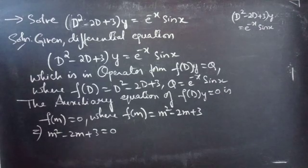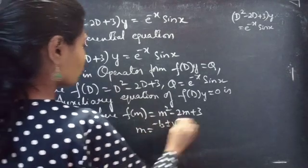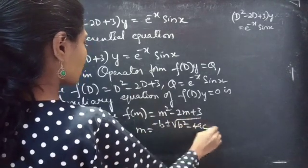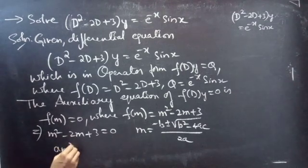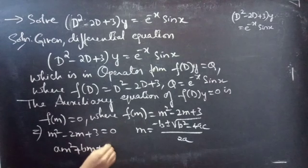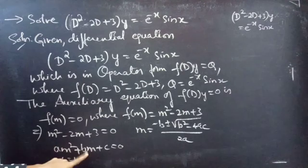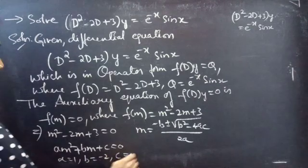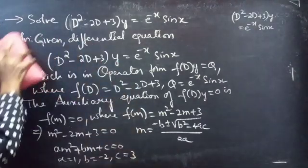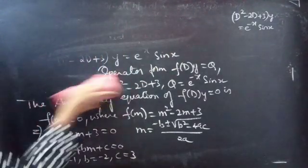We will find the roots using the quadratic formula: m = (-b ± √(b² - 4ac)) / 2a. Comparing m² - 2m + 3 = 0 with the standard quadratic equation, we get a = 1, b = -2, and c = 3.